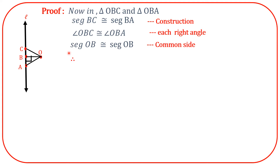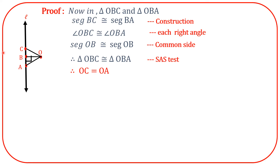Triangle OBC is congruent to triangle OBA by the SAS test. Therefore, segment OC is congruent to segment OA, as corresponding sides of congruent triangles. This means OC is congruent to OA.